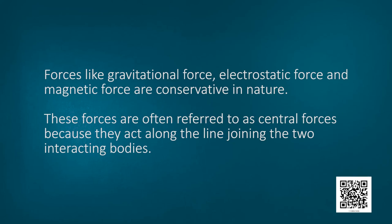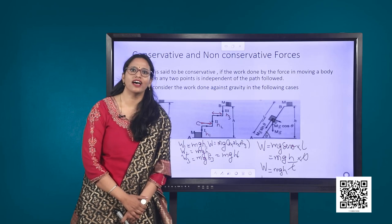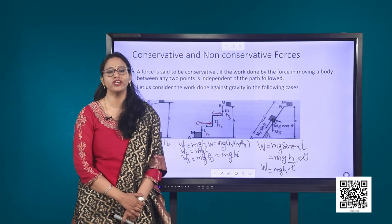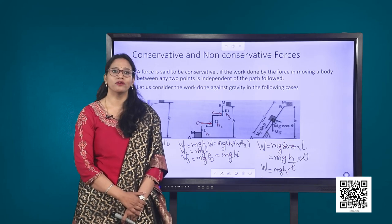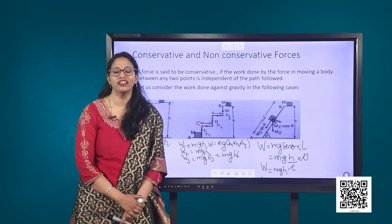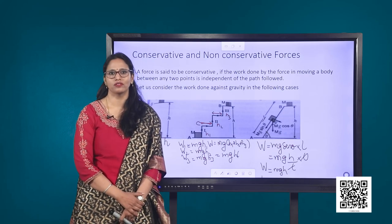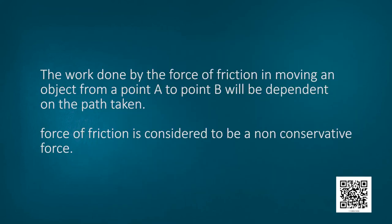So now we know that gravitational force is a conservative force. Forces like electrostatic force and magnetic force are also conservative in nature. These forces are often referred to as central forces because they act along the line joining the two interacting bodies. On the other hand, if the work done by a force over a closed path is non-zero or dependent on the path taken, then the force is said to be non-conservative. The force of friction is considered to be a non-conservative force.